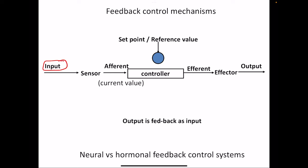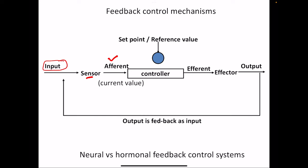In the feedback loop, there is an input, sensor, afferent, controller, efferent, effector, and output — and this output is fed back as input. Whatever output occurs is again fed back as input, making it a continuous process. Even if there is some change, the system checks whether it has done a correct job. There are continuous disturbances, so the system must always know the current value of the output and how it is changing.